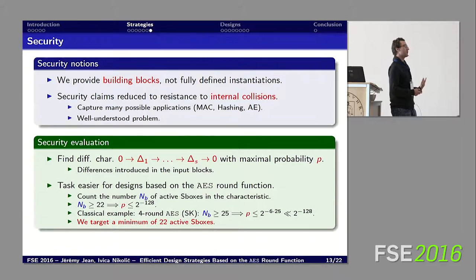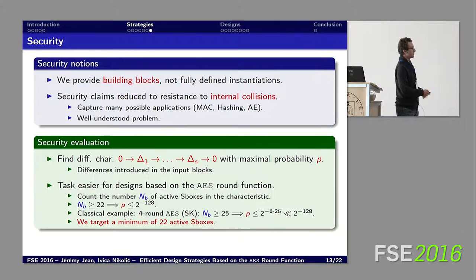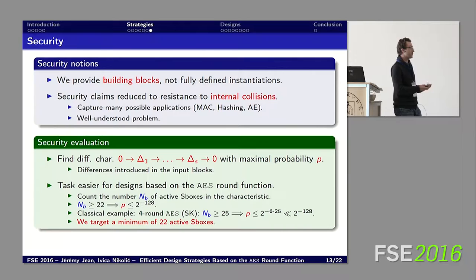For AES-based designs, we reduce this further to counting active S-boxes in the characteristic. If we can prove the minimum number of active S-boxes is lower-bounded by 22, we can say the probability of this characteristic is below the block size of AES to the minus 28. The classical example is 4-round AES in the single-key model, where the minimum number of active S-boxes is 25, proving the characteristic probability is below 2 to the minus 128. In our case we target at least 22 active S-boxes.